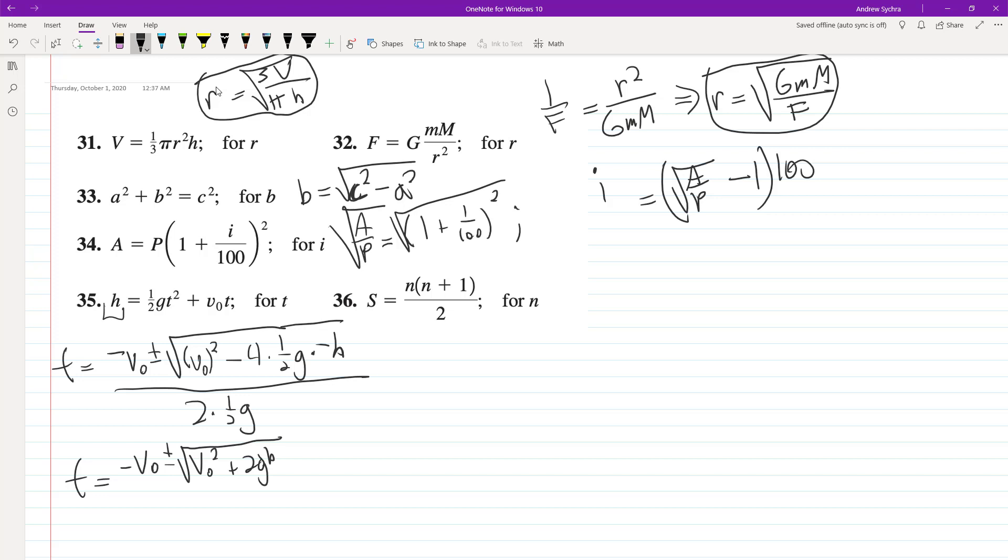The 4 and the 1/2 become 2, and then just over G. All right.